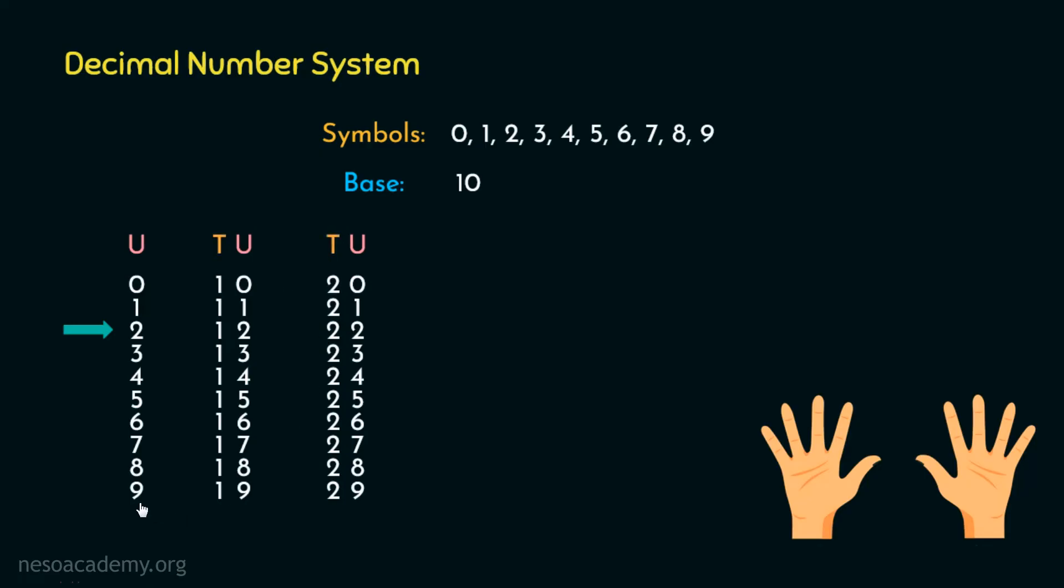Notice this, once we have used up all the symbols in units place, we introduce the tens place. Then again, for a specific symbol in tens place, once all the symbols in the units place are exhausted, we introduced a new symbol for it. So, eventually, when for the tens place, we have the symbol 9, and for 9, we have used up all the symbols in units place, in order to form the next number, we will introduce the new place, that is the hundreds place.